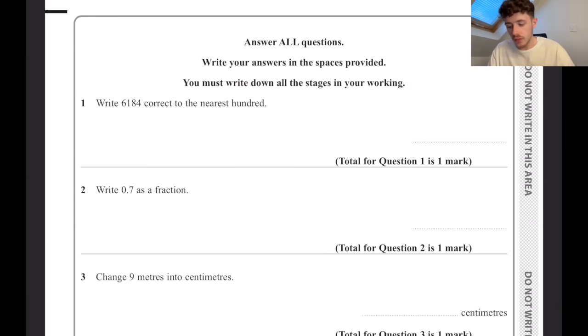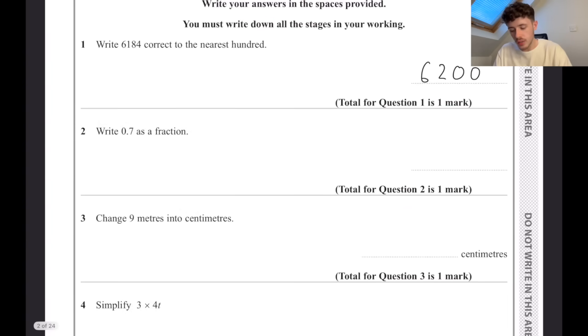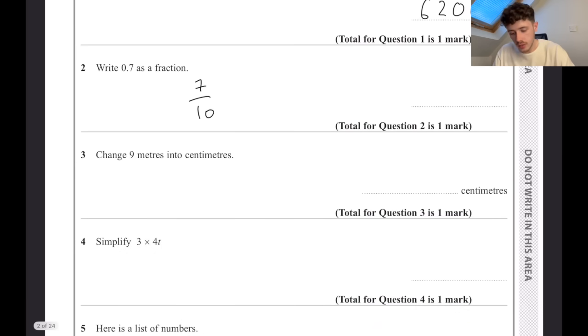Question number one: write 6184 correct to the nearest 100. That is going to be 6200. Write 0.7 as a fraction - 0.7 will be 7 out of 10. Change 9 metres into centimetres. Well, 1 metre equals 100 centimetres, so 9 metres is going to be 900 centimetres.